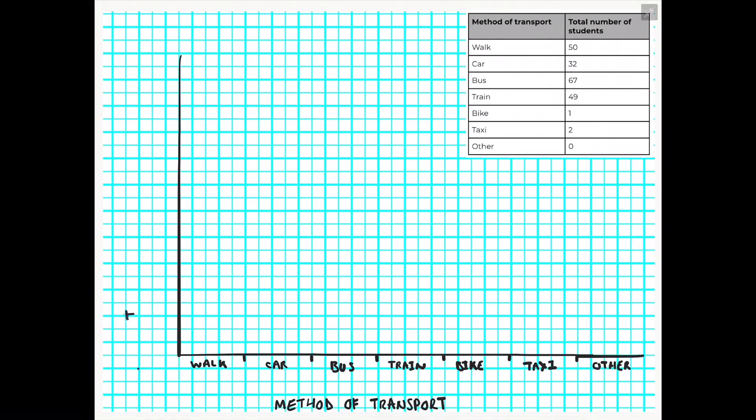At the side of our y-axis we're then going to have our total number of students who take that method of transport. I will look at the table and look at the highest number I will need to go up to, which in this case is 67, and then I will evenly distribute the numbers up my y-axis until I've reached that maximum number. I'm deciding to take the easiest route which is to go up in tens in this case.